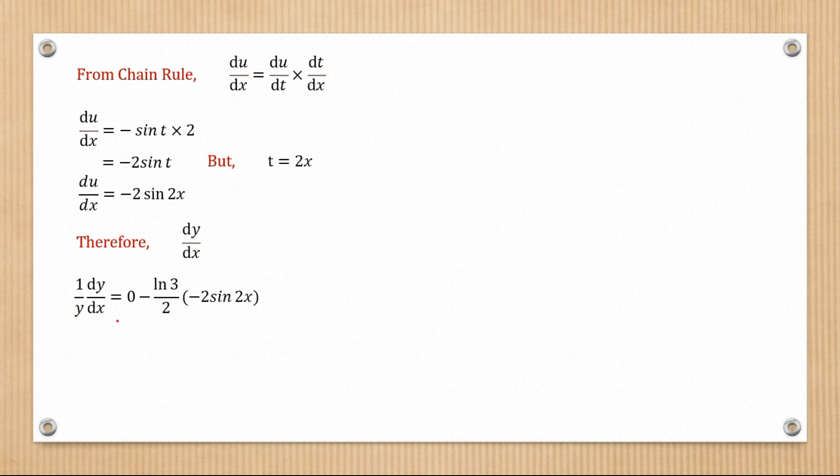On the left hand side we have 1 over y dy/dx equals zero plus ln 3 over 2 times this value. This is a constant attached, so we won't leave it as is. We're left with dy/dx being equal to y sin 2x ln 3.